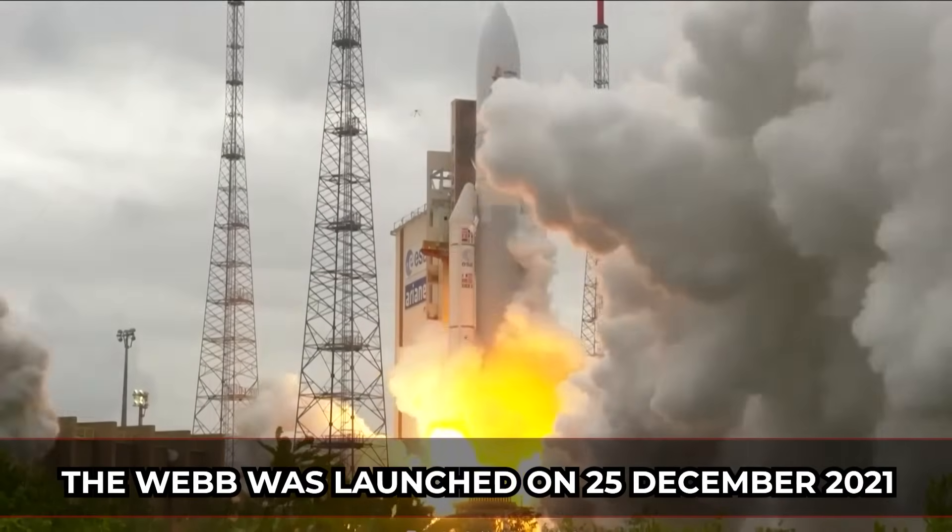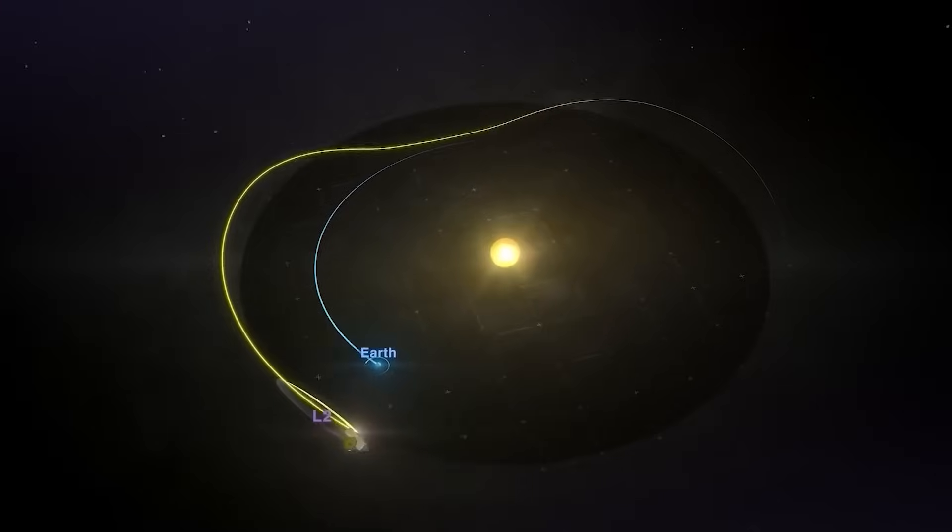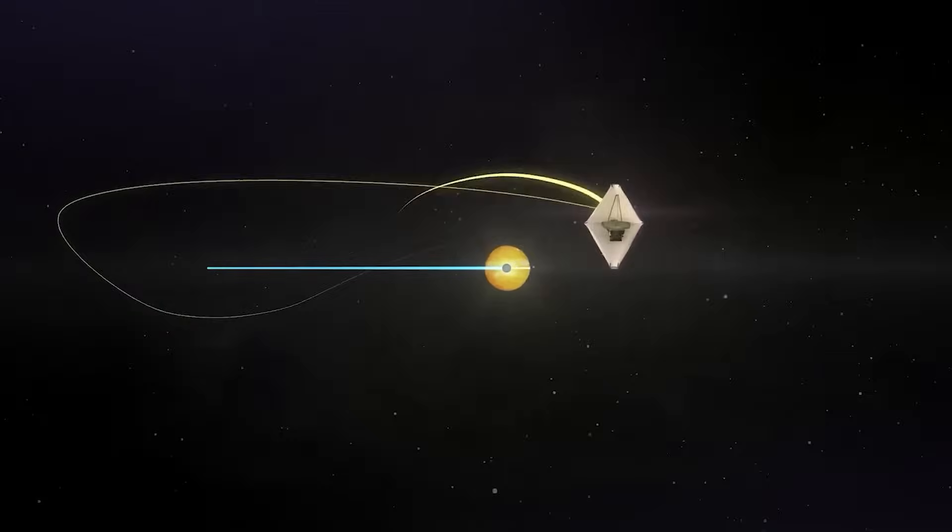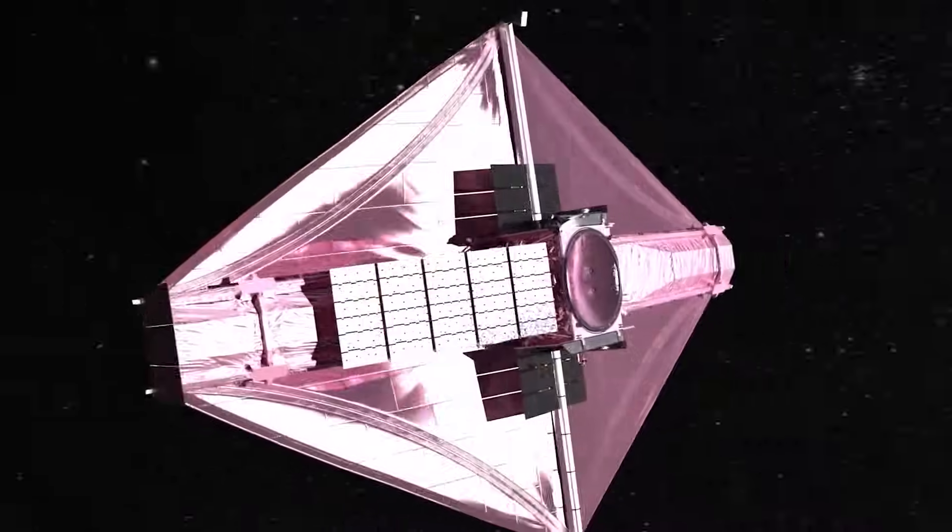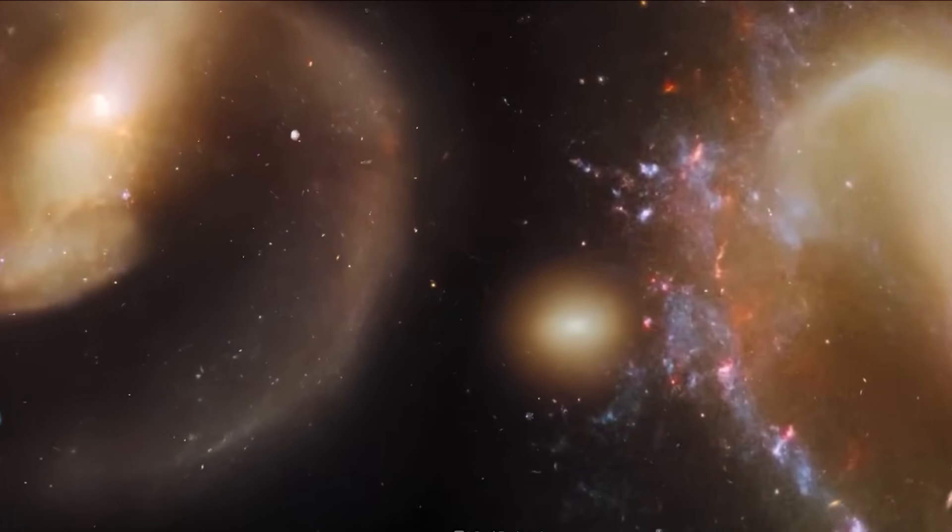The Webb was launched on the 25th of December 2021. In January 2022, it reached its first destination, solar orbit near the Sun-Earth L2 Lagrange point. From then onward, JWST has captured countless cosmic wonders that make us think how tiny we are.